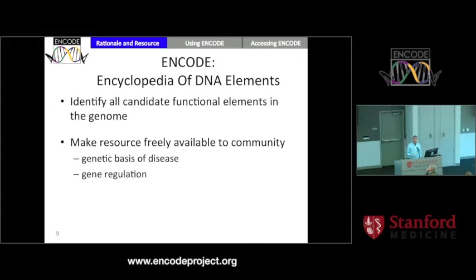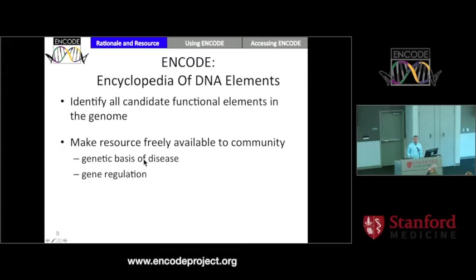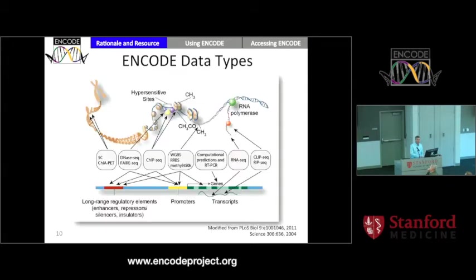The goals of ENCODE are really simple to state. We're trying to identify all of the candidate functional elements in the genome, and we're also trying to share this resource freely with the community. Freely means unrestricted access, not controlled access — there's no login, no purchase. You simply go to the website and use whatever it is that you want. People are using this to look at the genetic basis of disease, gene regulation, how mutation occurs, and so forth, but any process you'd like to use it for is allowed.